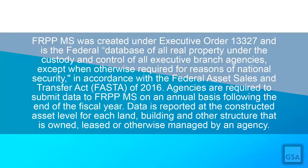FRPPMS was created under Executive Order 13327 and is the federal database of all real property under the custody and control of all executive branch agencies, except when otherwise required for reasons of national security, in accordance with the Federal Asset Sales and Transfer Act, or FOSTA, of 2016. Agencies are required to submit data to FRPPMS on an annual basis, following the end of the fiscal year.